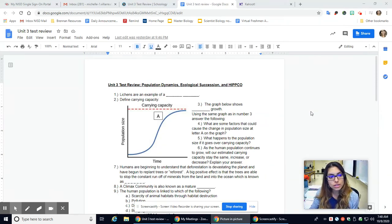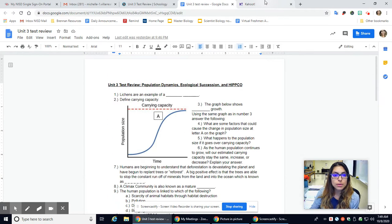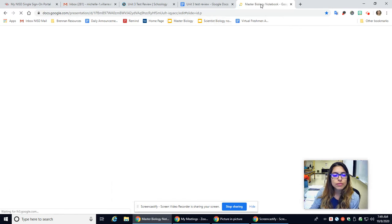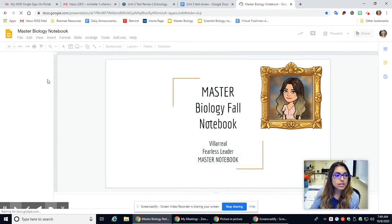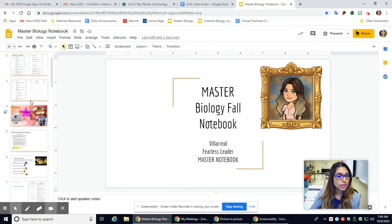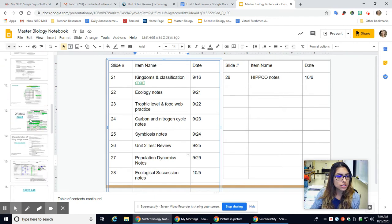Hey scientists, welcome back. Today we're going to be talking about your Unit 3 test review on population dynamics, ecological succession, and HIPCO. You have a total of 19 questions. I'm going to bring up my science notebook so that I have an active resource to use for my review.